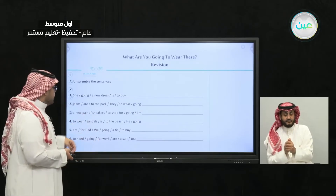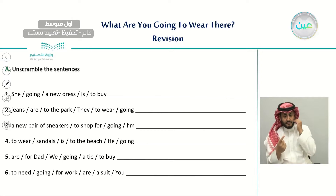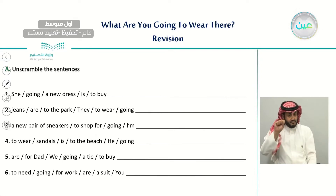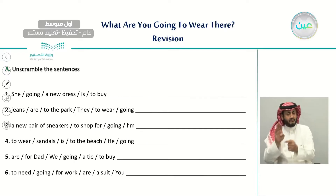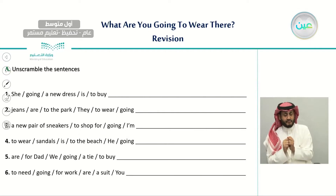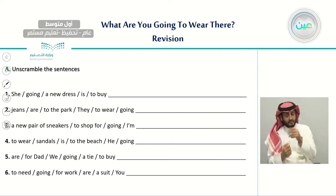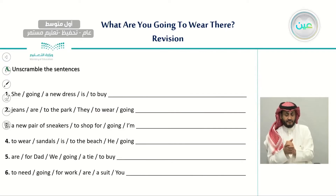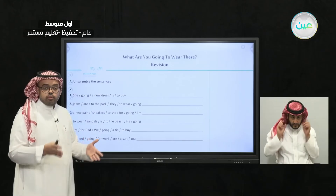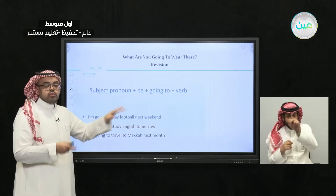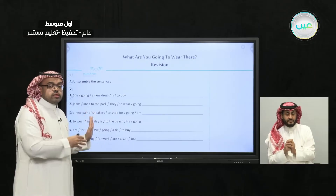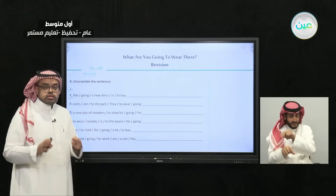We applied this form to an unscramble exercise. For number one: start with 'she' (subject), 'is' (verb to be), 'going to,' and then the verb. For number two: 'they' (subject), 'are' (verb to be), 'going to,' then 'wear.' It's important to follow this form to unscramble sentences and write them in the correct order.